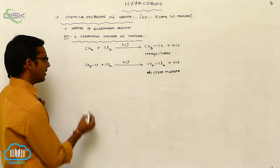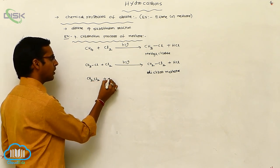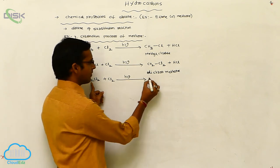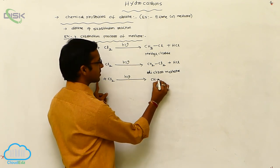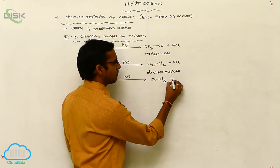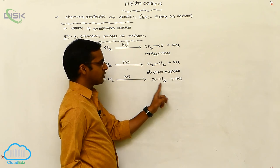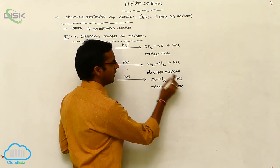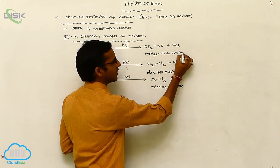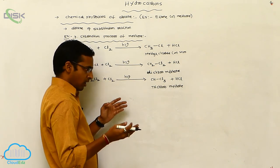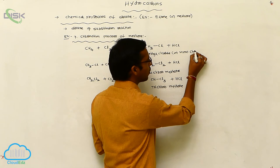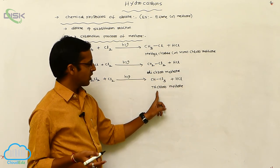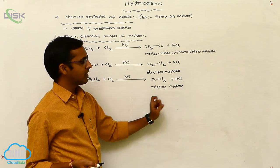Dichloromethane (CH2Cl2) reacts again with chlorine in the presence of photochemical conditions. One more hydrogen is replaced with chlorine, giving CHCl3 plus HCl. Two chlorines means dichloro; three chlorines means trichloro. So the products are: monochloromethane (1 chlorine), dichloromethane (2 chlorines), and trichloromethane (3 chlorines).